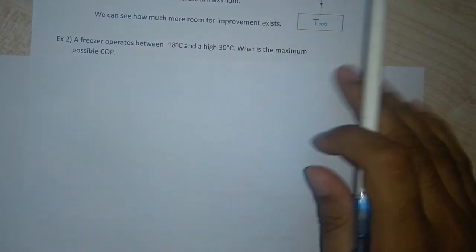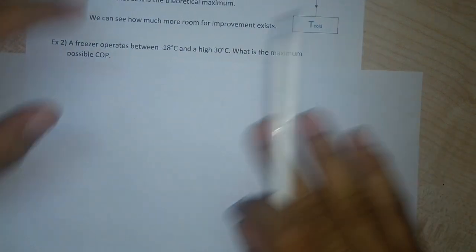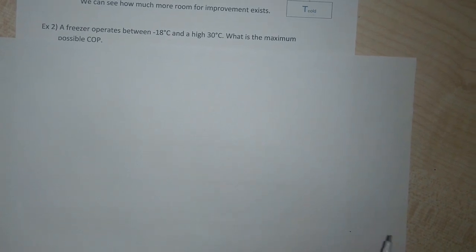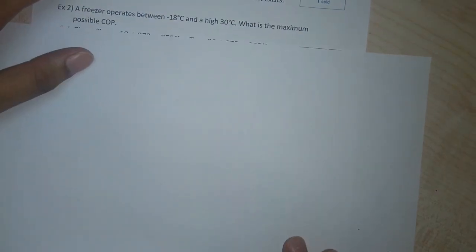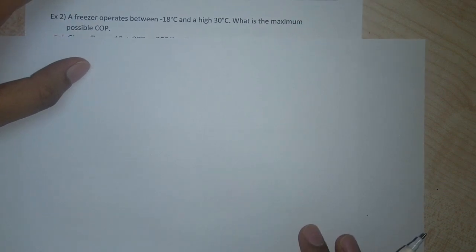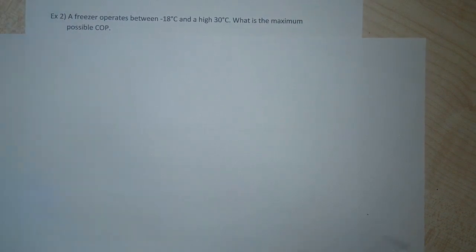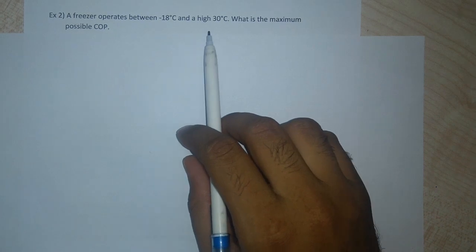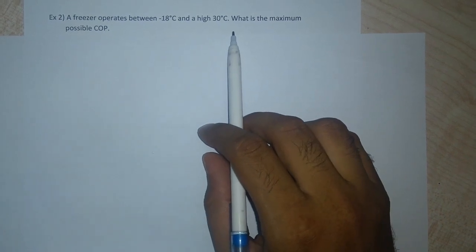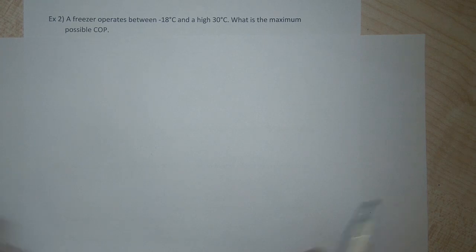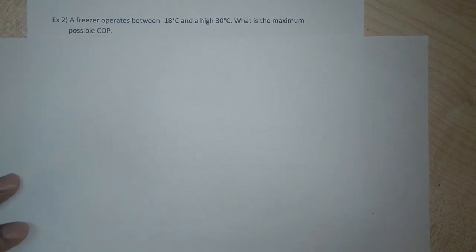The second problem deals with the reverse Carnot cycle, what we call refrigeration. According to the problem, a freezer operates between minus 18 degrees centigrade and a high of 30 degrees centigrade. What is the maximum possible COP, that is the coefficient of performance?